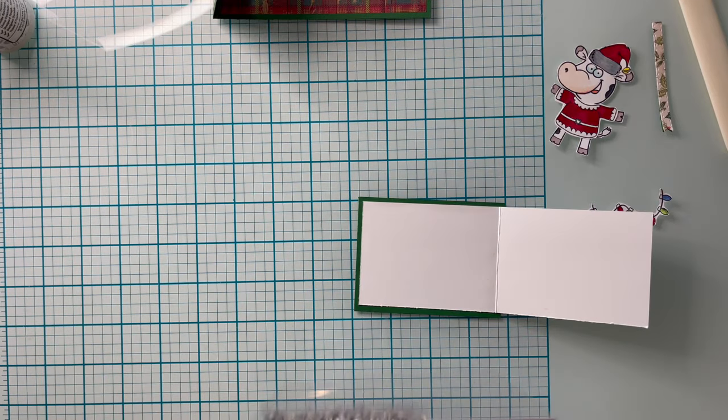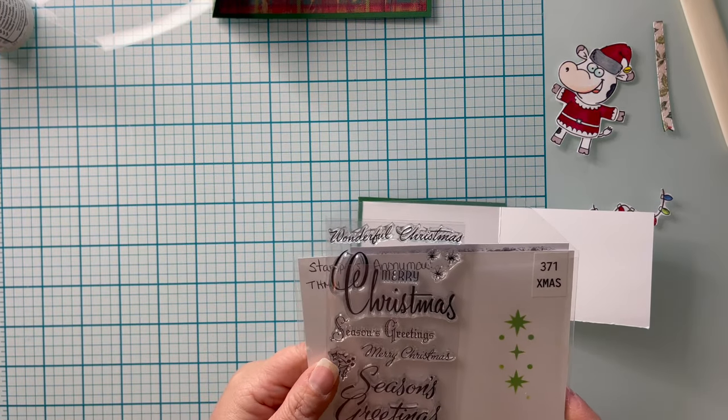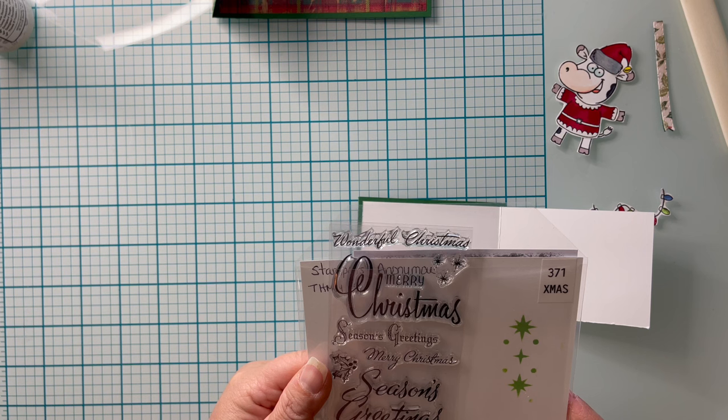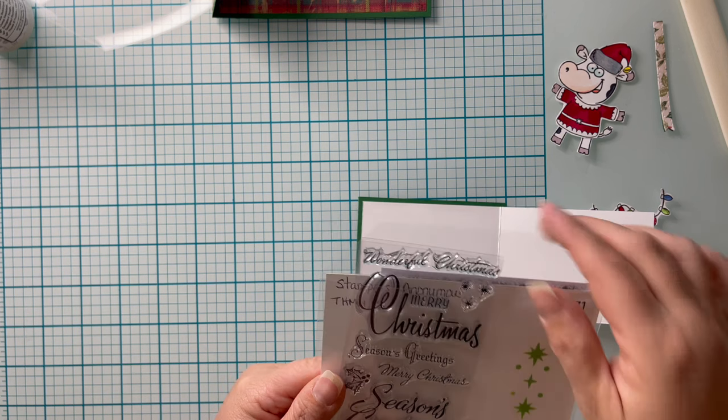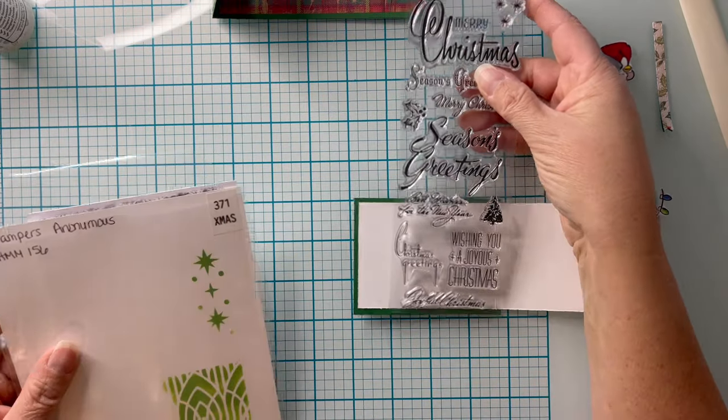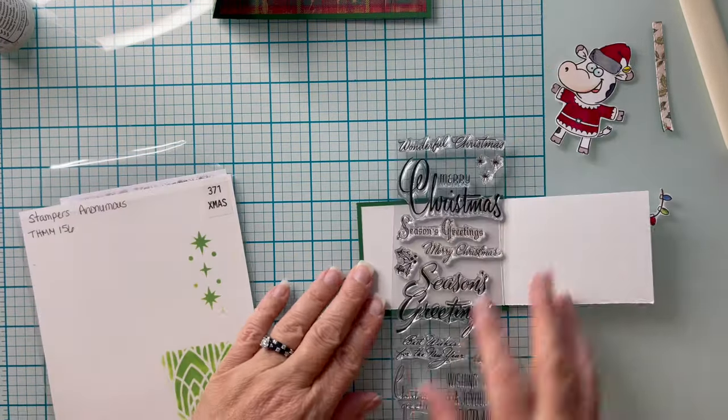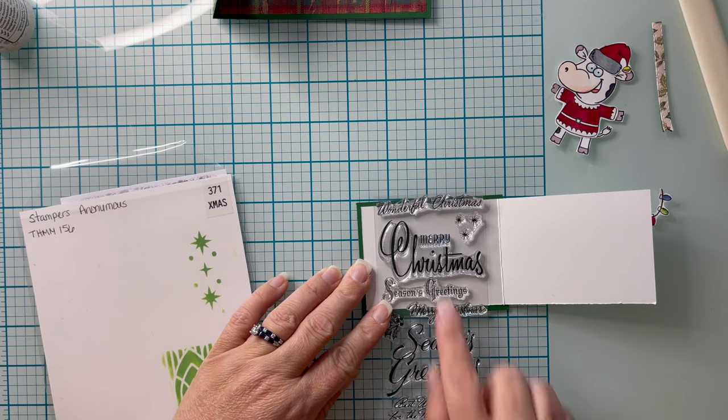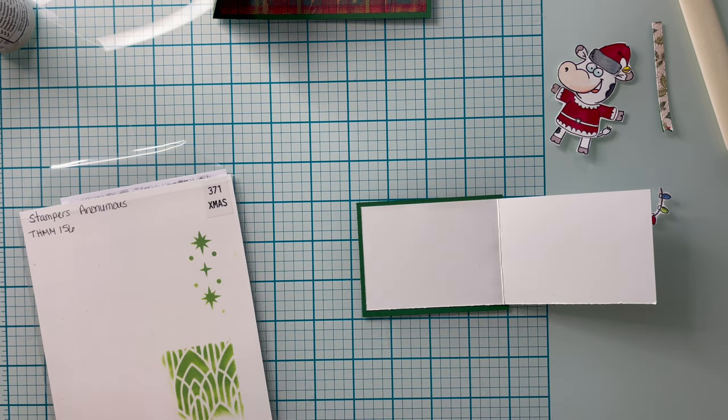Once my card panel is attached, I'm going to go ahead and add my sentiment to the inside of the card. This is a Stampers Anonymous stamp and stencil set, and this one is THMM156. I do not know if this is still available, but I will look to see, and you know if I can find it I'll put it in the links for you.